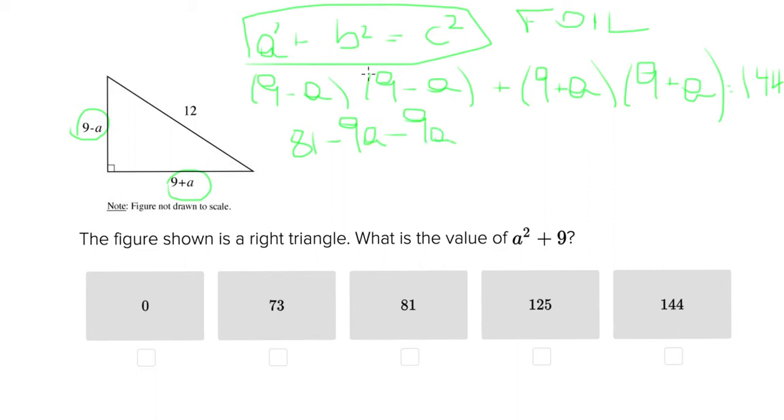And then the last term. So you're going to have negative a times negative a which a negative times a negative is a positive a squared. Now you're going to go on and do the exact same thing on this side. So using FOIL you've got the first terms first. So 9 times 9 is 81 again. The outer terms plus 9a. The inner terms plus 9a again and then the outer terms plus a squared.